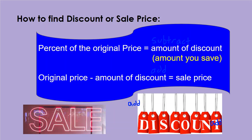How to find discount or sales price: first, we take the percent of the original price and that gives us the amount of discount — the amount you saved. Then we take the original price and subtract the discount amount, and that equals the sale price.